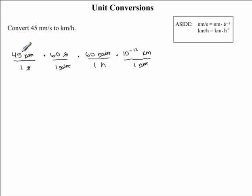Now we just need to multiply our fractions. 45 multiplied by 60, multiplied by 60 again, multiplied by 10 to the exponent negative 12. Once we multiply these through, your final answer in scientific notation will be 1.6 times 10 to the exponent negative 7. And our units are kilometers per hour. And this is our final answer.